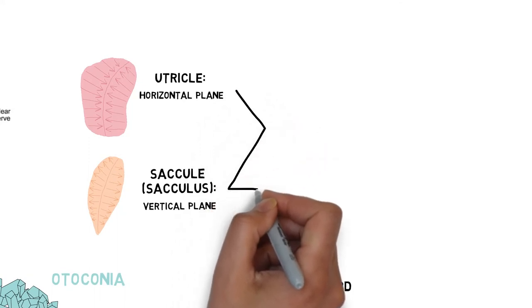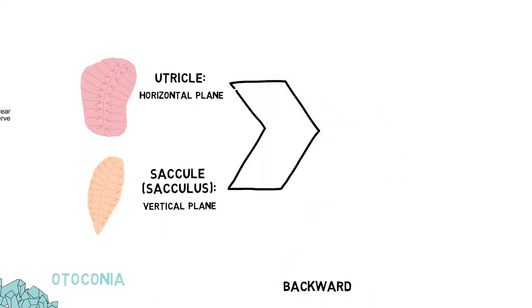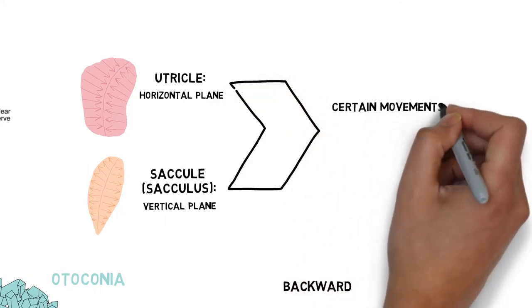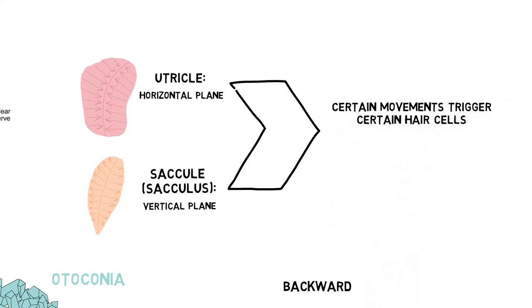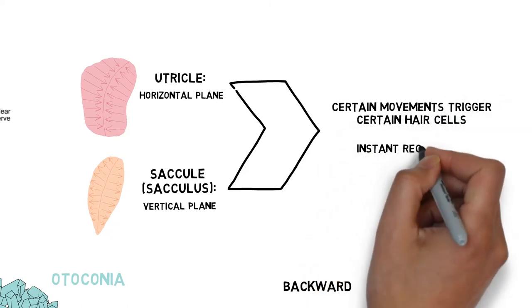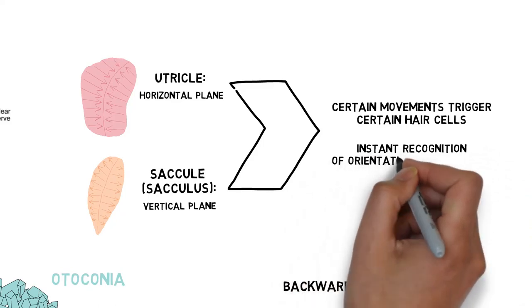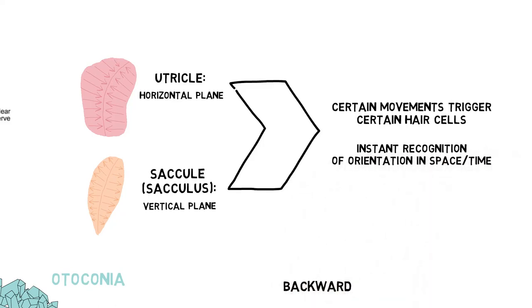Because of the shape and position of the utricle and sacculus, movement of the head in any direction, or tilting the head in any direction, will trigger a subset of hair cells, allowing the brain to instantly recognize orientation of the head in space and movement of the body.